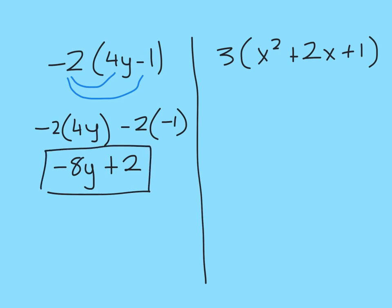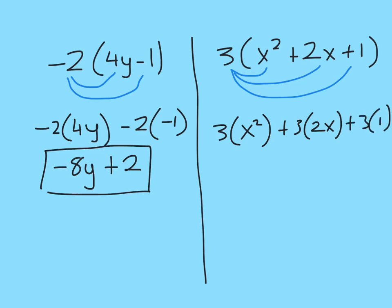Looking at the second question. So again, let's use the loops. So I have 3 by x squared, 3 by plus 2x, and 3 by plus 1. So let's write them out. 3 by x squared, plus 3 by 2x, plus 3 by 1. So 3 by x squared gives me 3x squared. 3 by 2x gives me 6x. And then 3 by 1 gives me plus 3.